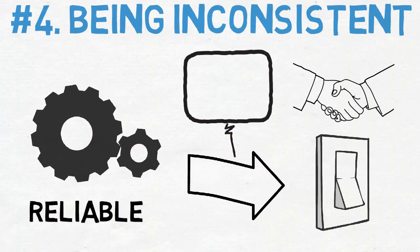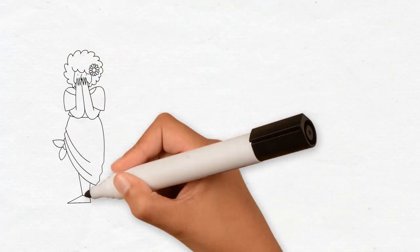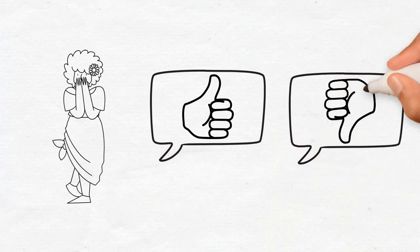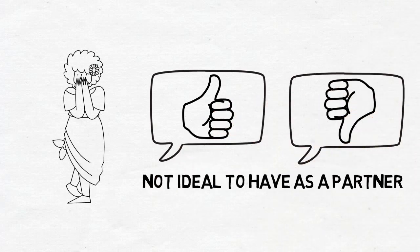The opposite of these traits turn women off. They don't feel safe or easy around inconsistent men. A man who says one thing and does the other is simply unreliable and not ideal to have as a partner.